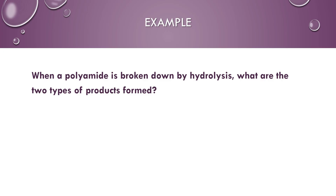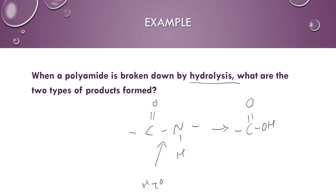This example question has us looking at the reverse of condensation polymerization. Instead of forming the polymer, we're going to break it apart. When a polyamide is broken down by hydrolysis, what are the two types of products formed? Let's draw our generic amide — this bond here is the amide linkage. When that is broken down, you are effectively adding water — hydrolysis means adding water. That's going to break apart into a carboxylic acid, and the other hydrogen from the water goes to form the amine. So the two types of products formed are a carboxylic acid and an amine.